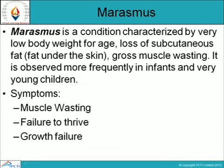Failure to grow is another important feature of the disease. The children often weigh about 50% or less of normal children for their age. For example, a healthy normal 1-year-old child weighs about 10 kg, whereas a marasmus child would weigh only about 5–6 kg.